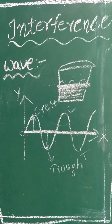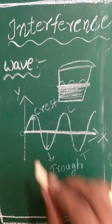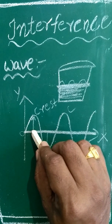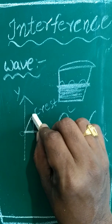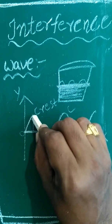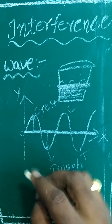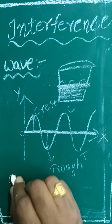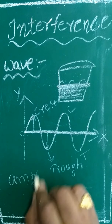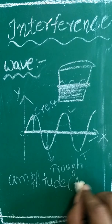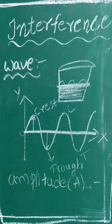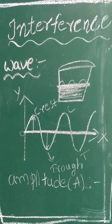Now we need to discuss amplitude and wavelength. The particle displaces to a first maximum distance — that maximum displacement is called amplitude. It can be denoted with the letter A. The maximum displacement from the equilibrium position is called amplitude.